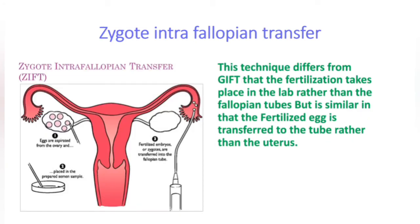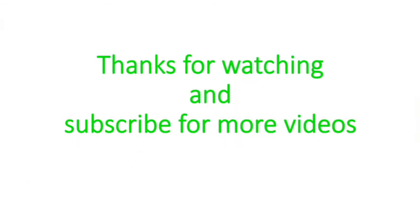In ZIFT — Zygote Intra-Fallopian Transfer — the technique differs from GIFT in that fertilization takes place in the lab rather than the fallopian tubes, but it is similar in that the fertilized egg is transferred to the tubes rather than the uterus. Today we discussed in vitro fertilization, GIFT, and ZIFT procedures. Thanks for watching and subscribe for more videos.